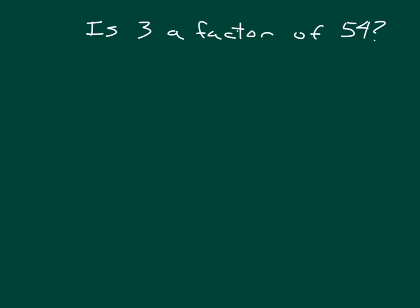Here's another question. Is 3 a factor of 54? Well, what we can do is we can use division to check to see whether or not 3 is a factor of 54. We can see whether or not 54 is divisible by 3. That is, a number where it is that there is not a remainder. So we call that it's divisible by. We'll see whether it's divisible by 3. If it is divisible by 3, then 3 is a factor of 54.